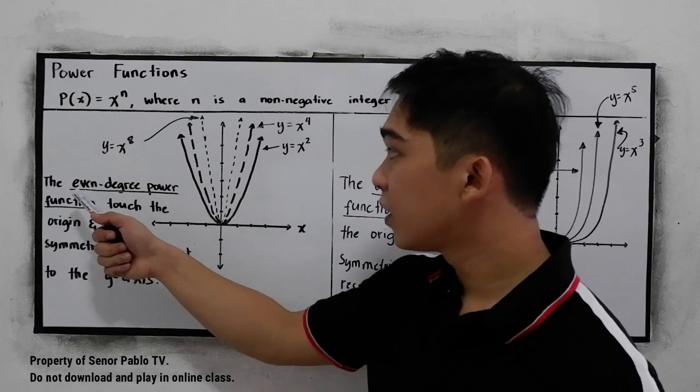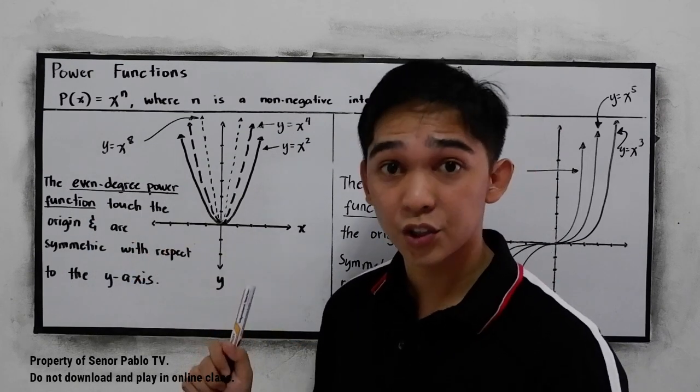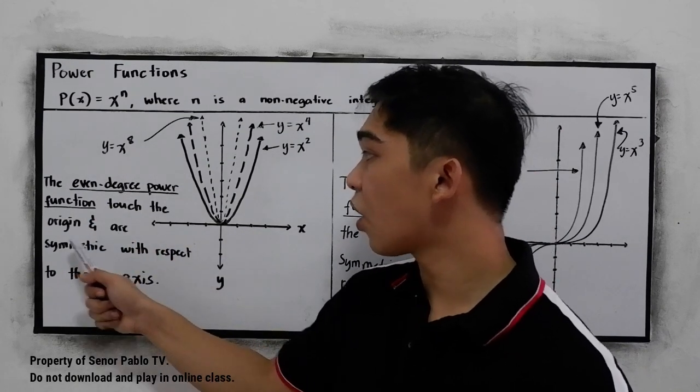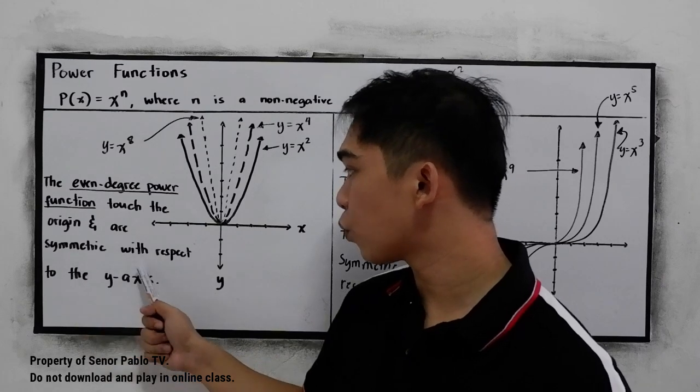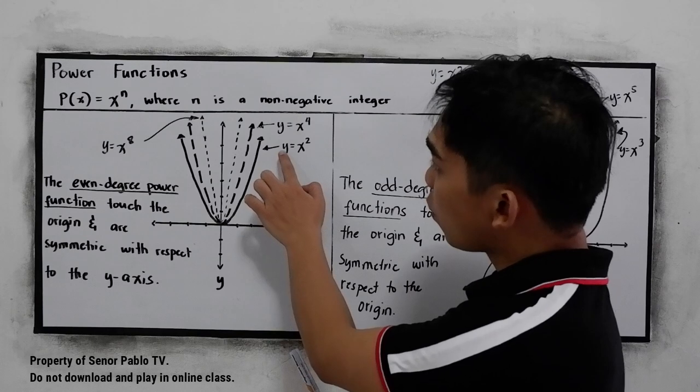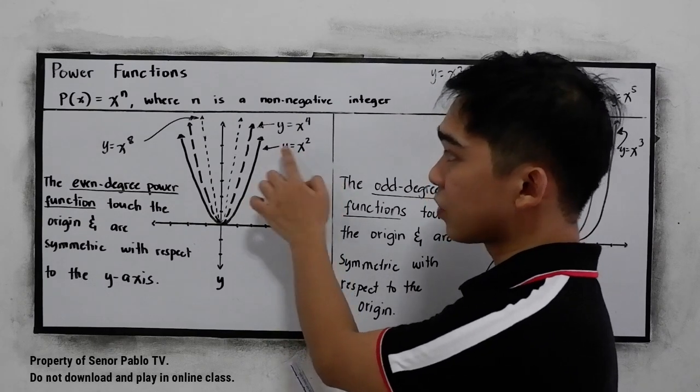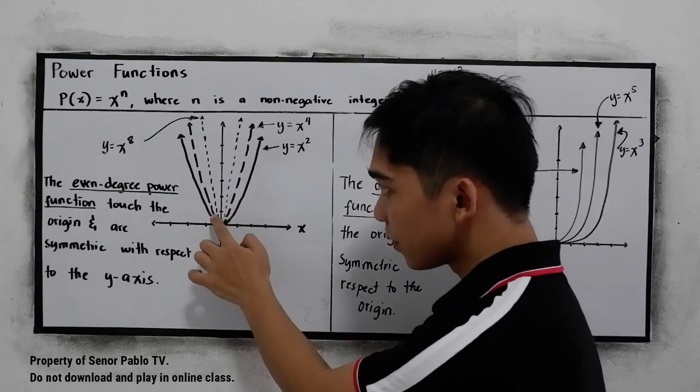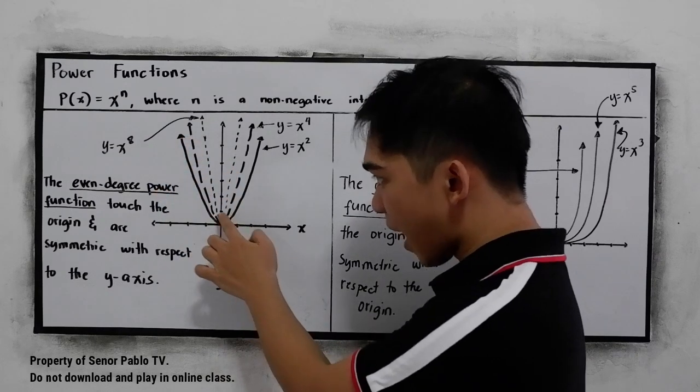Power functions, we have the even degree power function, which touch the origin and are symmetric with respect to the y-axis. So let's say we have here y = x^2. So this is our graph. It is symmetric to our y-axis.